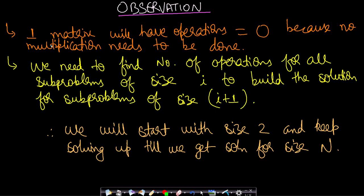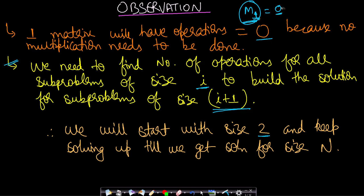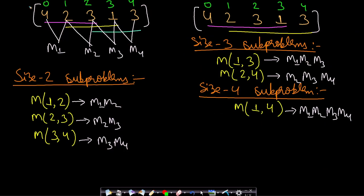The key observation is that a single matrix has zero multiplication operations because no multiplication is needed — M1 alone requires zero operations. The second observation is we need to find the number of operations for all sub-problems of size i in order to build the solution for sub-problems of size i+1. Therefore, we start with size 2, since size 1 always gives zero operations, and keep solving up until we get the solution for all n matrices.